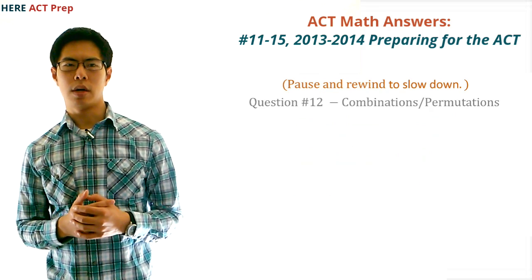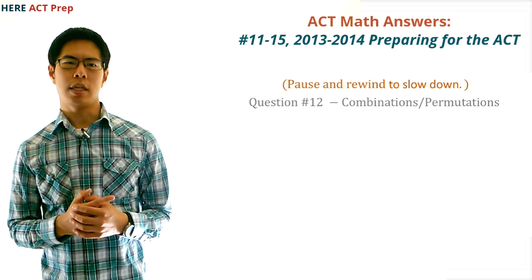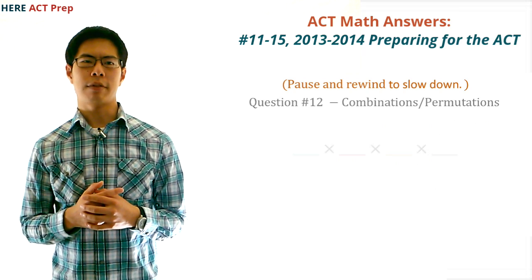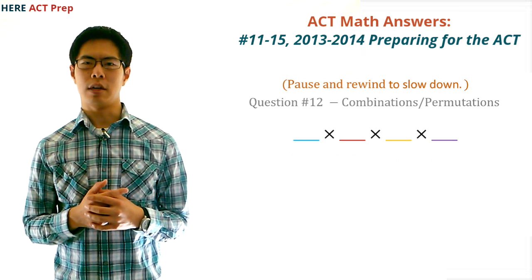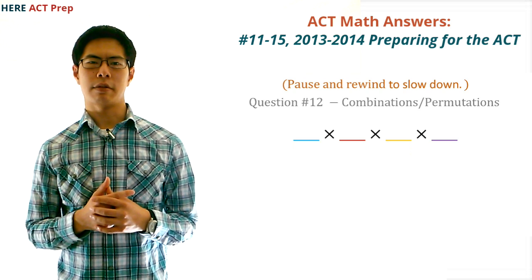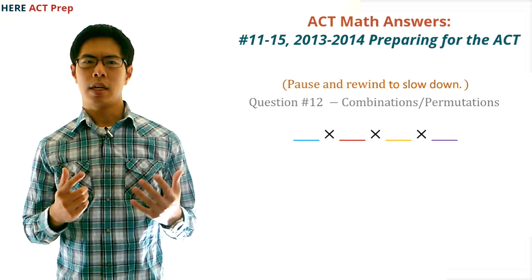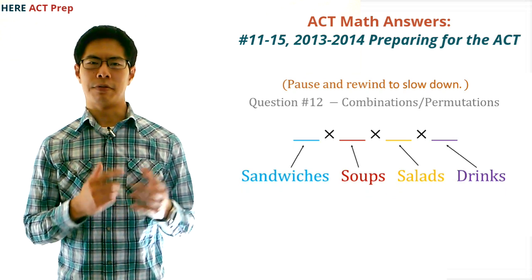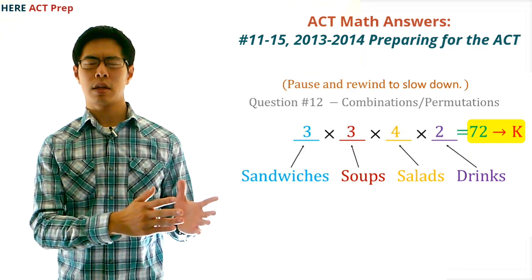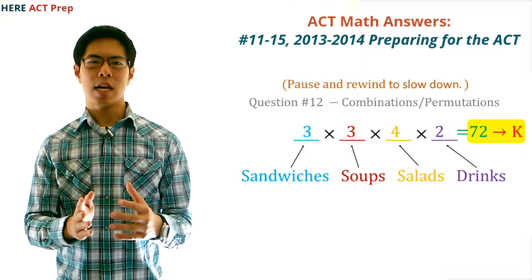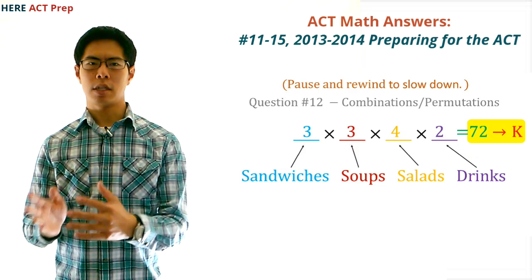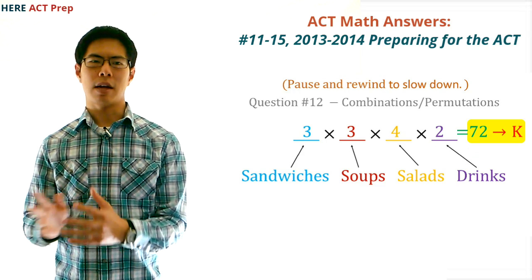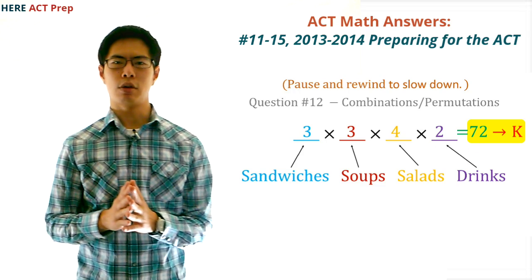Question number 12. The concept this question tests is combinations. The first thing I would do is draw a line for how many slots we need to fill, which in this case is 4. Next, I would write how many options we have for each slot. For the first slot, sandwiches, we have three options. For the second slot, soups, we have three options. For the third slot, salads, we have four options. And for the fourth slot, drinks, we have two options.